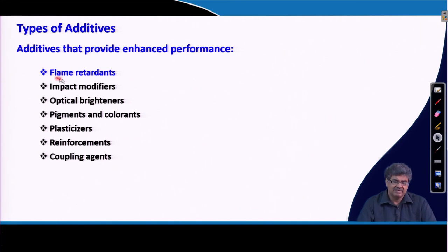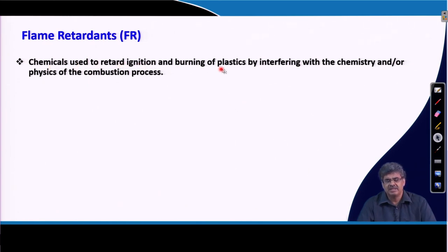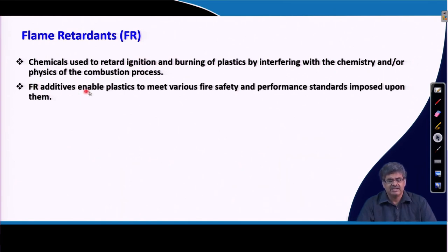Let me discuss flame retardants. Flame retardants are chemicals used to retard ignition and burning of plastics by interfering with the chemistry and/or physics of the combustion process. These additives enable plastics to meet various fire safety and performance standards imposed by regulatory authorities. Without them, plastic materials cannot be used in many indoor applications or in transport.